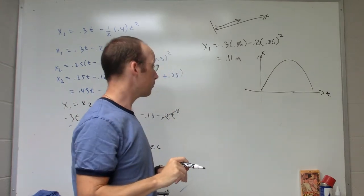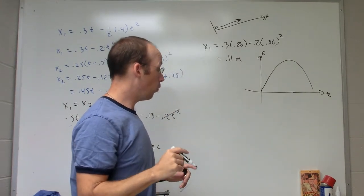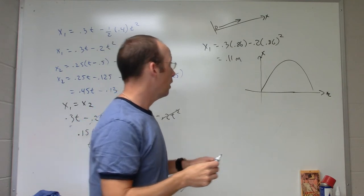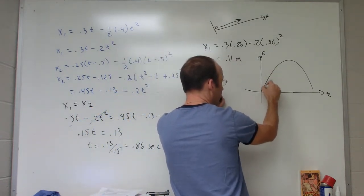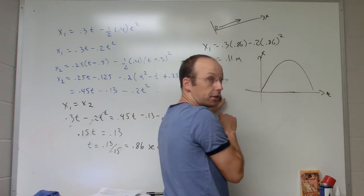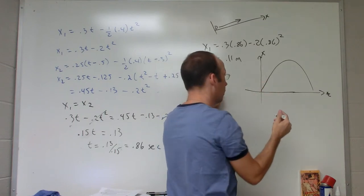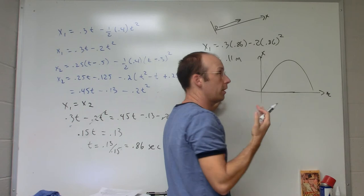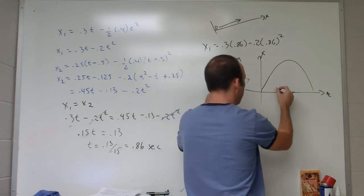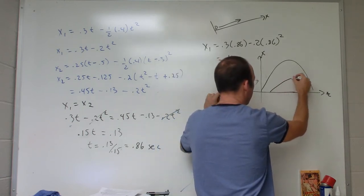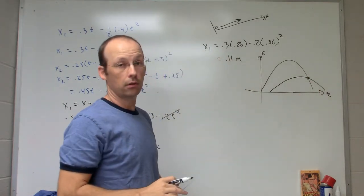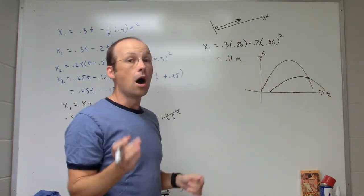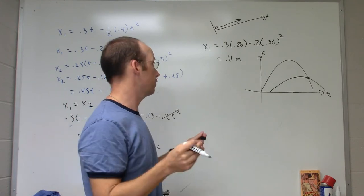The second one starts a little bit later, and what's going to be different about it is that its initial slope isn't going to be as great because it's going to be slower. You don't really know where it's going to cross in the sketch, but you do know it's going to cross. So that's the point where they meet. That's an exaggerated view, but you get the idea.